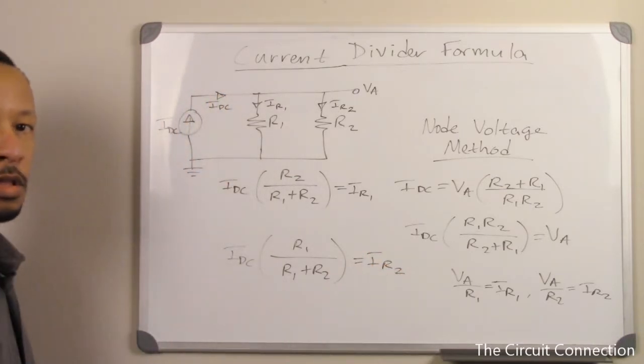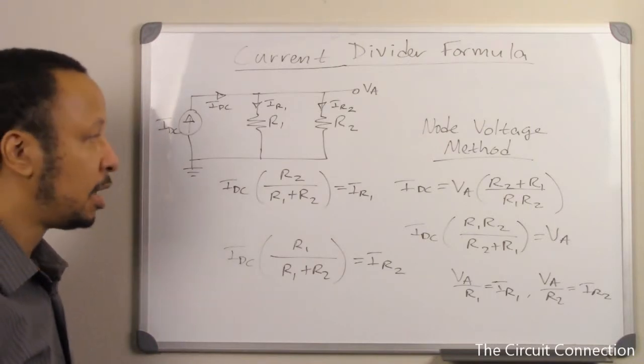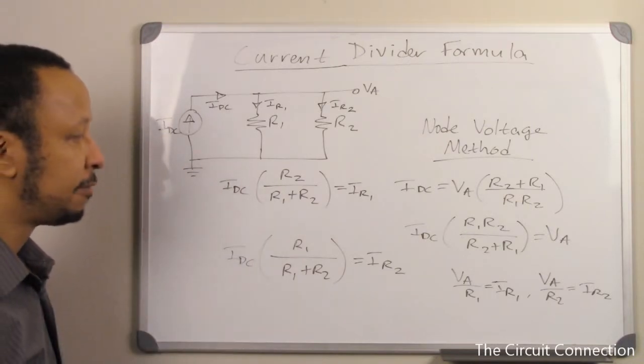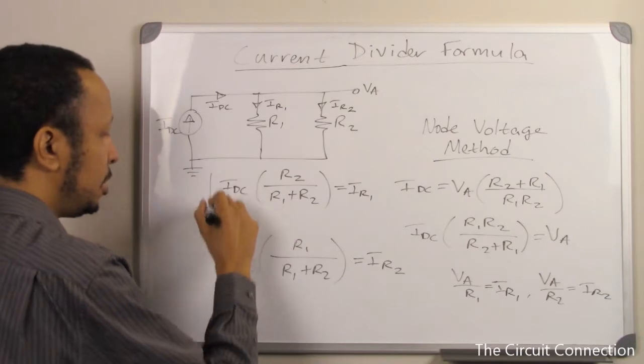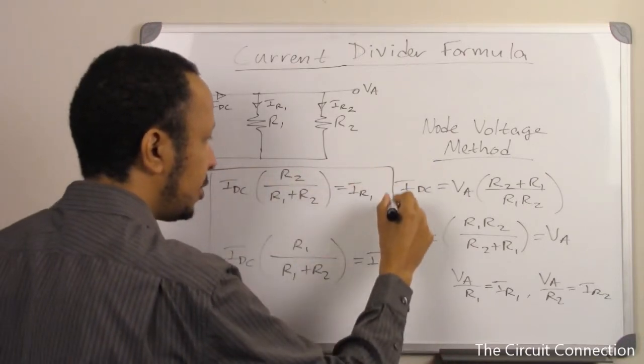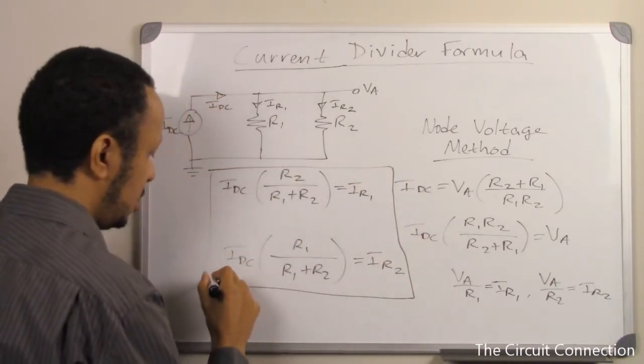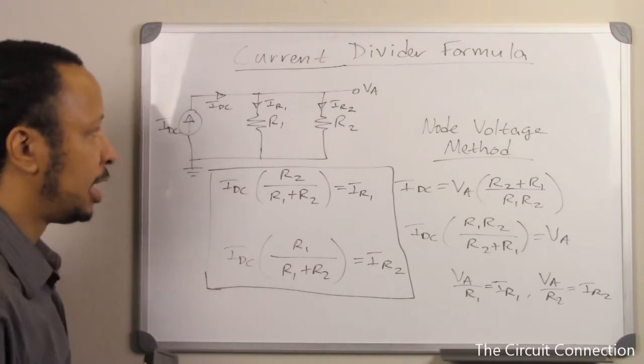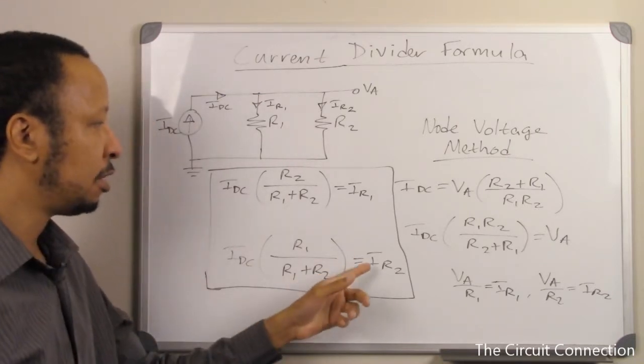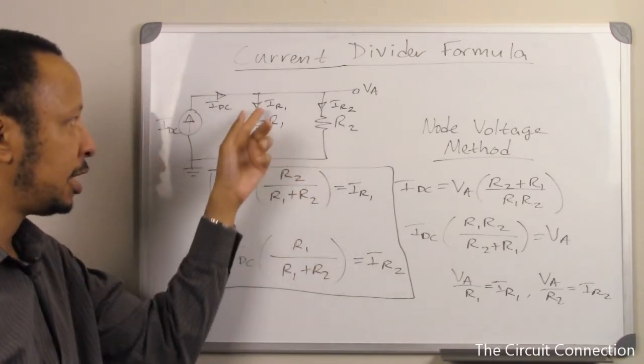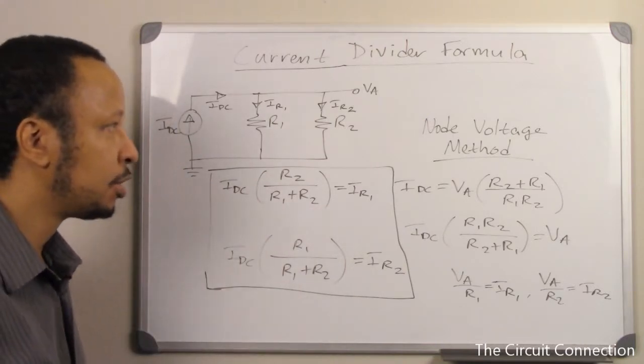That is the derivation of our current divider formula. We'll be using these any time we have a situation where we have current divider and we want to know what is the current down this branch of the circuit or down that branch of the circuit.